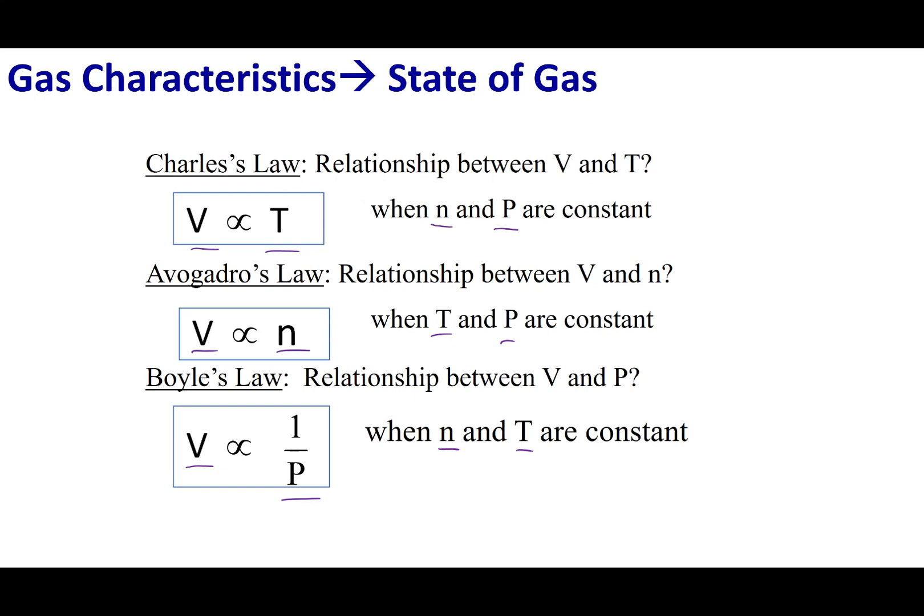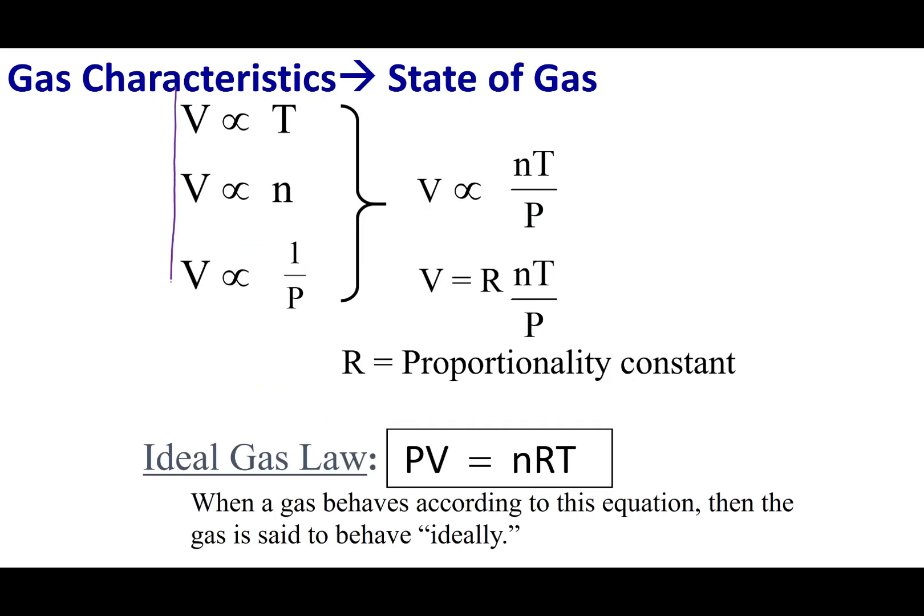Now what you'll notice is I put everything in terms of volume. So what we can do is if we have volume on one side of our proportionality, we can put all the other relationships on the other side. So I can take the number of moles, times it by the temperature, and divide it by the pressure. This should be proportional to the volume. Instead of using proportional, we can use a proportionality constant, and so we can rewrite our equation. Now this equation is commonly written like this: PV equals nRT.